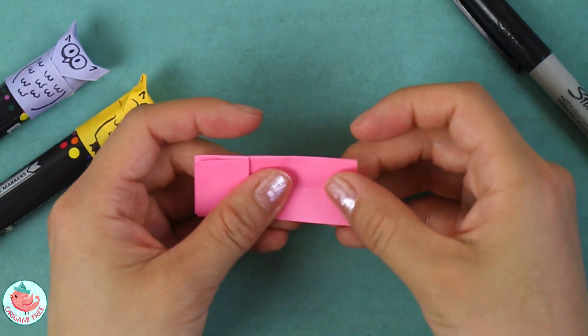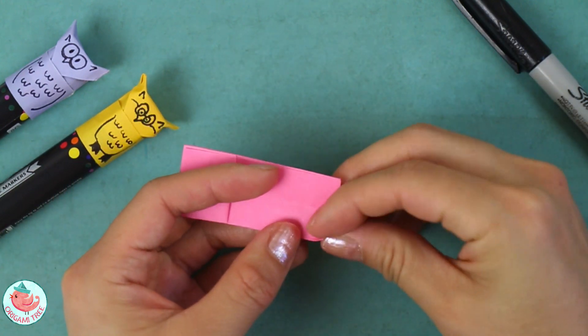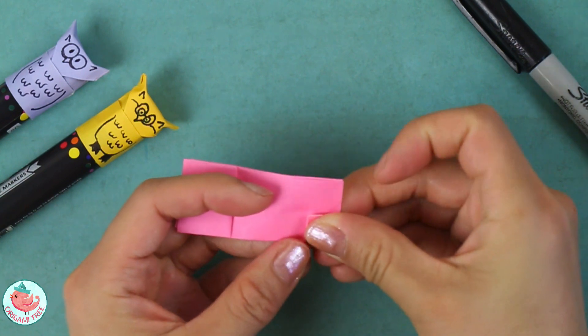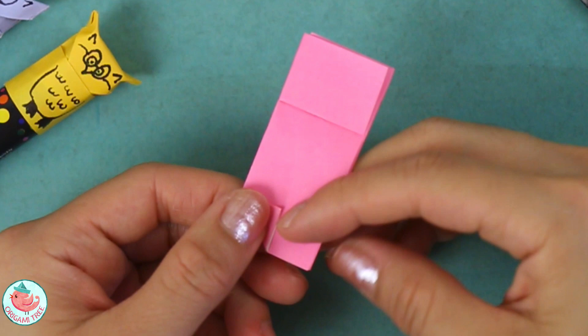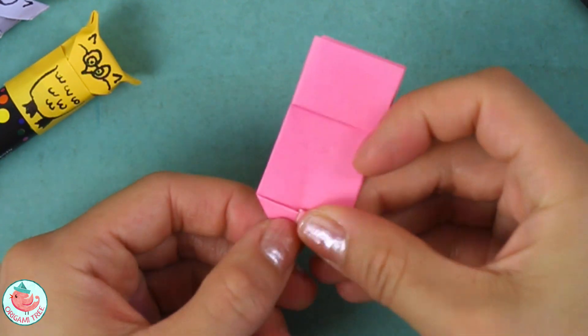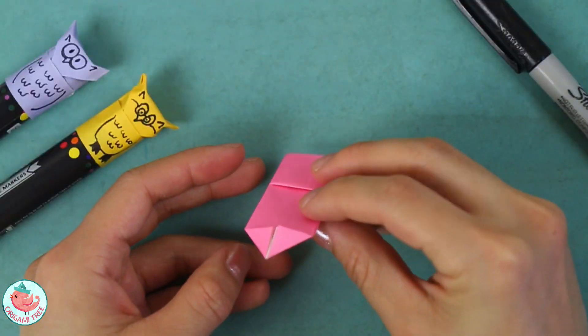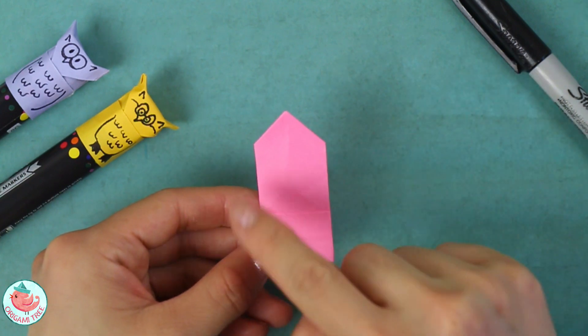Next you're just going to fold this diagonally to that center point, crease it in. Repeat the same thing on this side just like that. Flip the entire thing around and it should look like that.